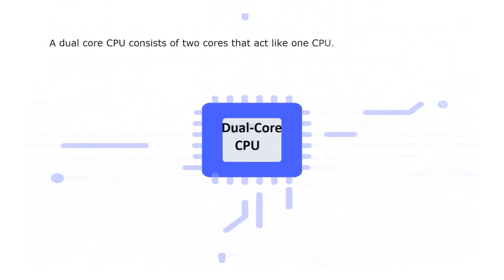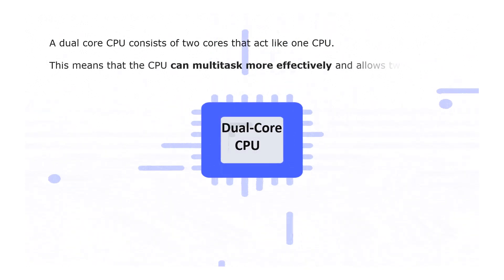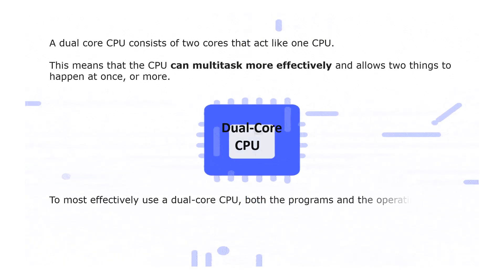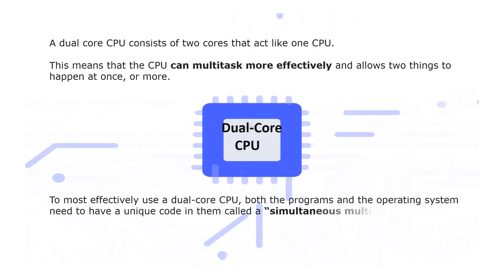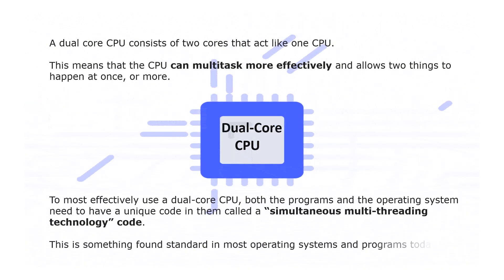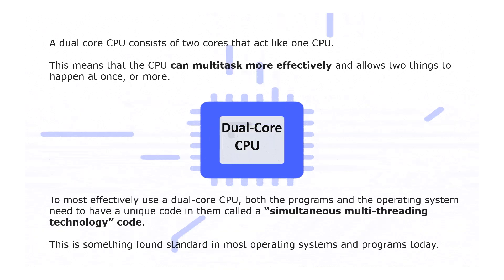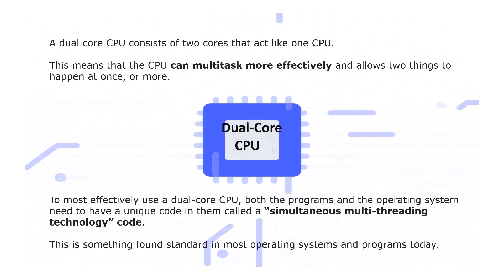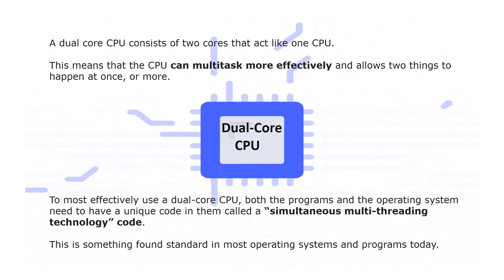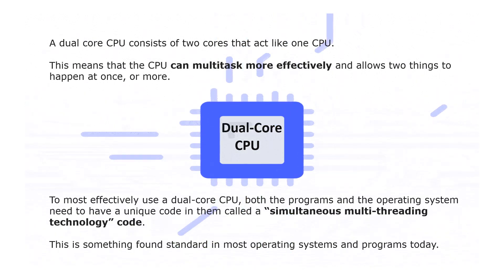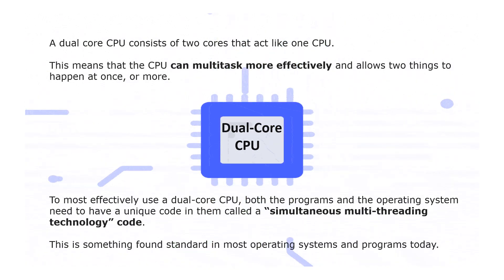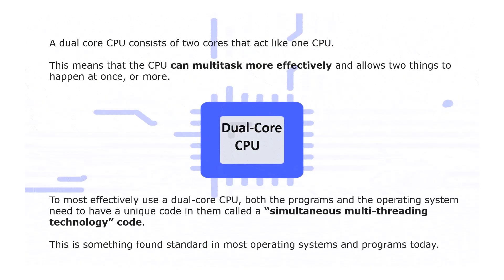Next is the dual core CPU. This consists of two cores that act like one CPU, meaning the CPU can multitask more effectively and allows two things to happen at once. To most effectively use a dual core CPU, both the programs and OS need to have a unique code called simultaneous multi-threading technology, which is found standard in most operating systems and programs today. This dual core CPU is mostly used today.